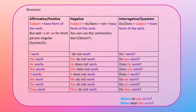Now let us look at the pattern or structure to follow when using the simple present tense. For affirmative or positive sentences, the pattern is: subject plus the base form of the verb, but add S or ES for third person singular — he, she, or it. For example: I work, you work, he works, she works, it works, we work, they work.